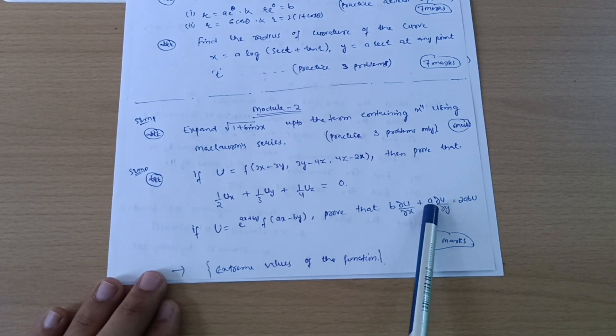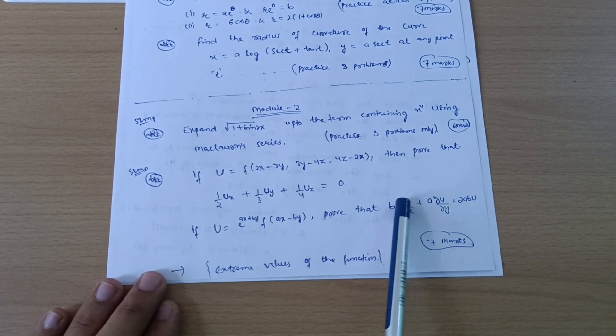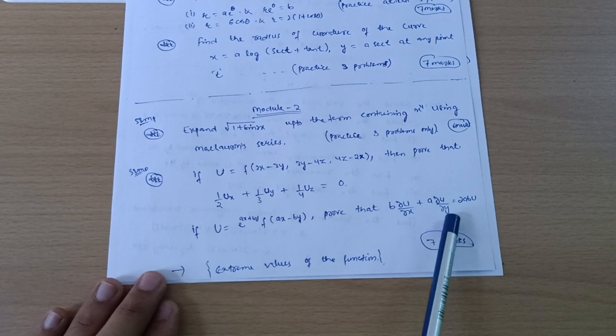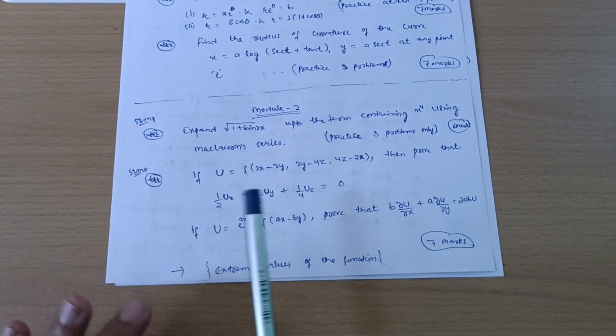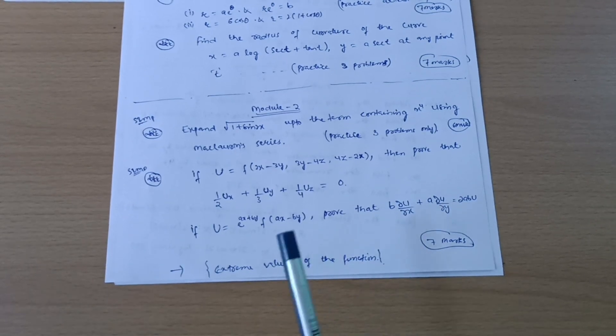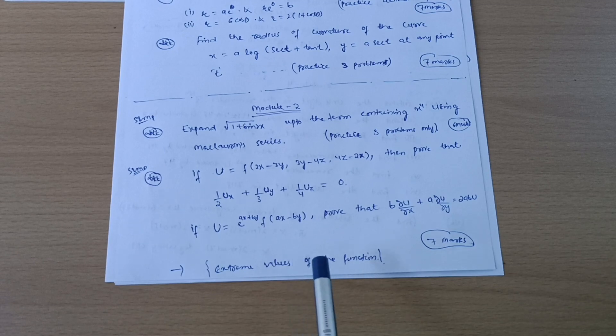Sometimes instead of this u they can give you z, so b dz/dx, a dz/dy is equal to 2ab z. So don't be confused, this is the same derivation. They can give you also u or sometimes z. And if you are convenient with the extreme values of the function problems, these are maxima minima, if you are convenient so you should go through it.